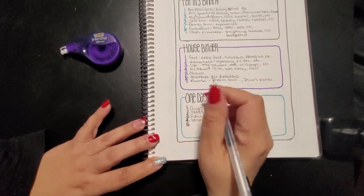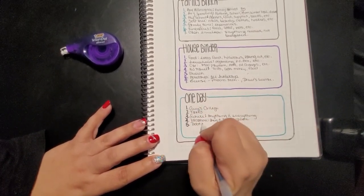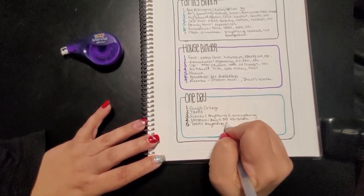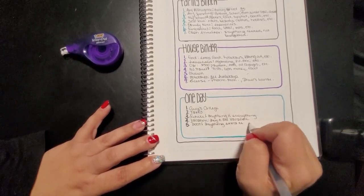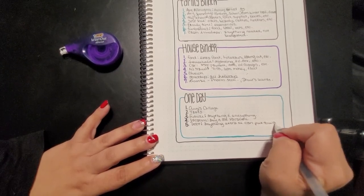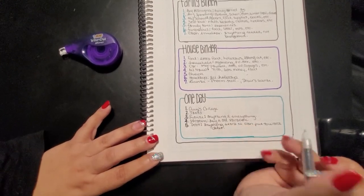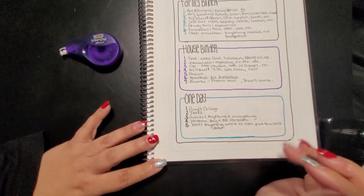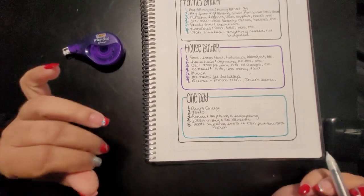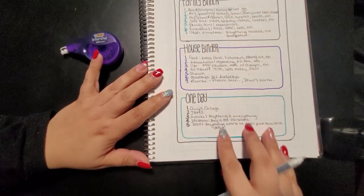And then number five is just going to be debt. And it's anything extra I could put toward debt. So anything extra I can put toward debt. I try to keep this as simple as possible. This right here is going to be my binders and my sinking funds.